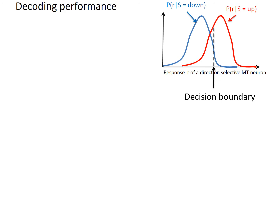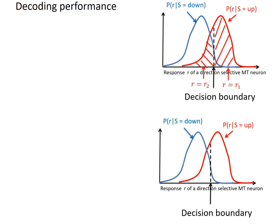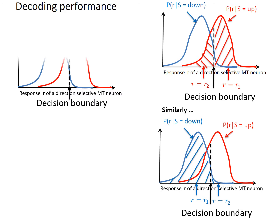Let's characterize the decoding performance with our example of decoding motion direction. With this decision boundary, if the motion direction is up and gives neural response R = R1, then the decoding outcome is correct; if the response is R2, the decoding outcome is incorrect. Therefore, the size of the area under the red curve is the probability of correct decoding outcome, and the other area is the probability of incorrect decoding outcome if the actual motion direction is upward. Similarly, if the actual motion direction is downward, the large area under the blue curve is the probability of correct decoding outcome, and the tiny area is the probability of incorrect decoding.